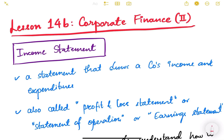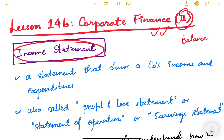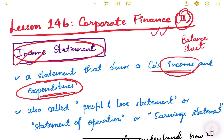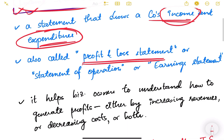Let us continue corporate finance - this is the second video. In this video we are going to study the income statement of the company. In the previous video we already studied the balance sheet. The income statement is one of the important financial statements of a company, and it basically shows a company's income and expenditures. It is also called the profit and loss statement.